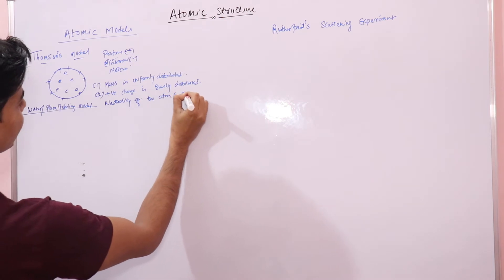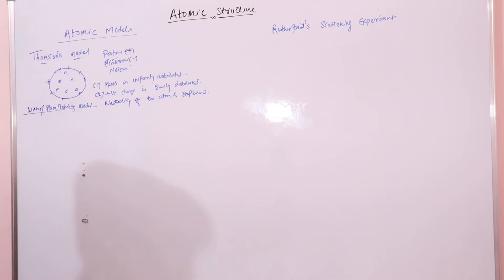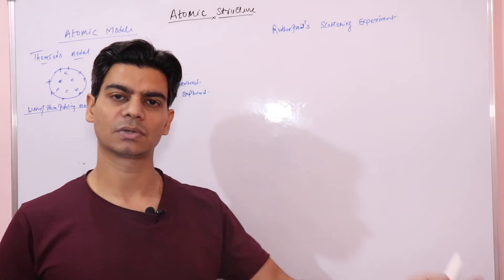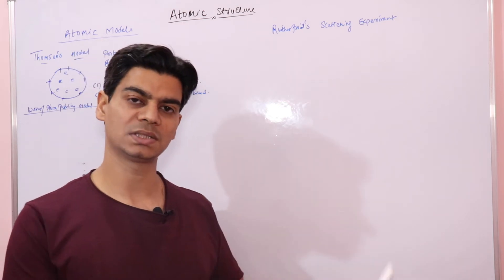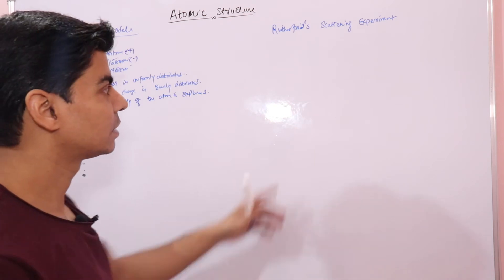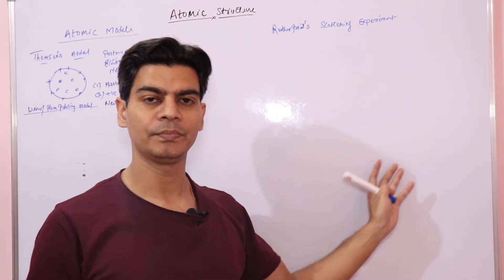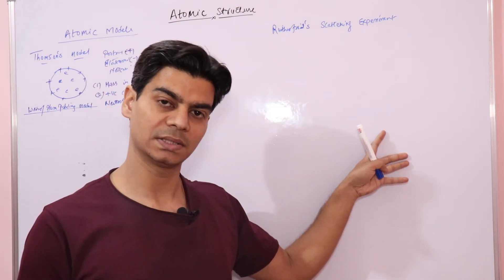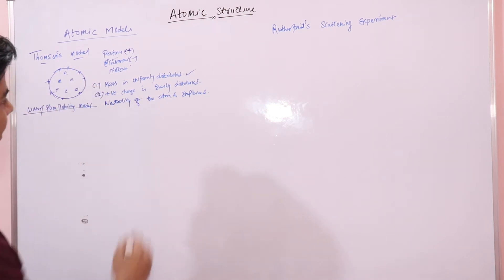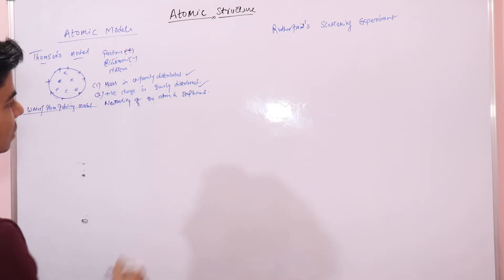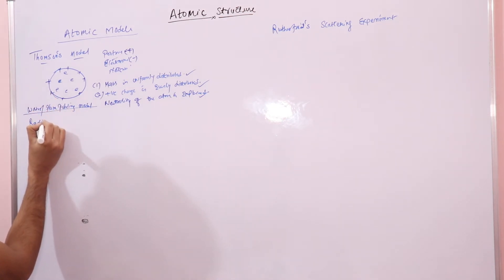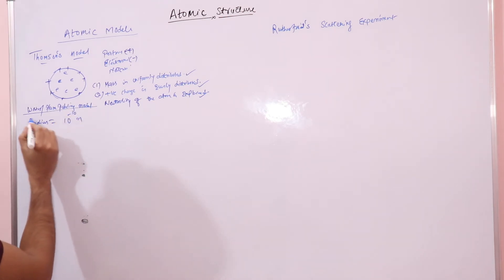However, Thomson's model of the atom was not successful, because it could not justify some results of later experiments. The model was proved wrong based on the results of Rutherford's alpha particle scattering experiment. To summarize: mass is uniformly distributed throughout the sphere, positive charge is evenly distributed, it explained the neutrality of the atom, and the radius of the atom is 10 to the power of minus 10 meters.